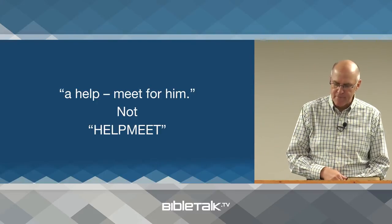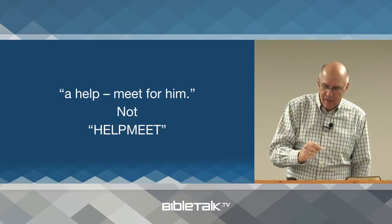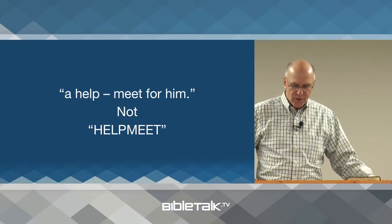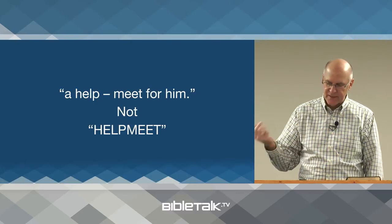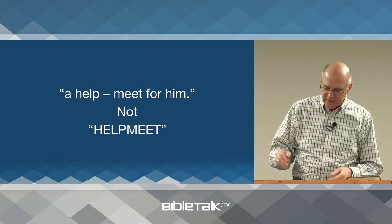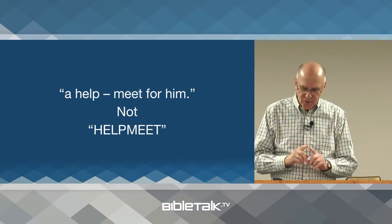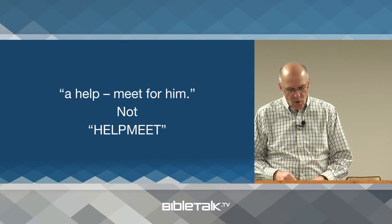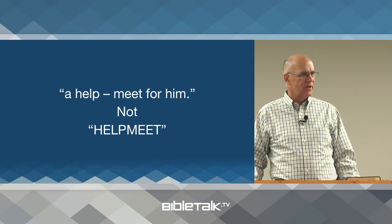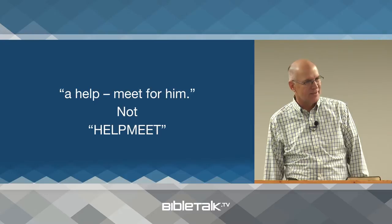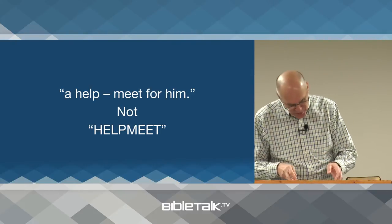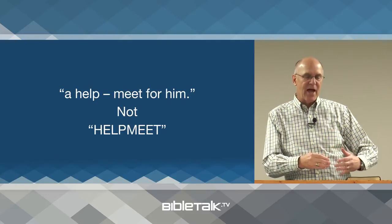The term is 'a help meet for him' — not 'helpmeet' as one word. The original root of this word meant to surround or to protect; in its form in Genesis it means to aid or to help. Together you could say 'a helper to help him' — or an aid to assist, and here's the key word, to assist or to save him. Save him from his loneliness and his incompleteness. But before God provides this, He brings Adam to the realization of his need through his interaction with the animal world.